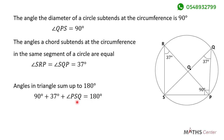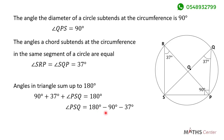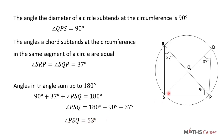Let's solve this equation for the value of angle PSK. Angle PSK equals 180 degrees minus 90 degrees minus 37 degrees, which gives us 53 degrees. So the value of angle PSK is 53 degrees.